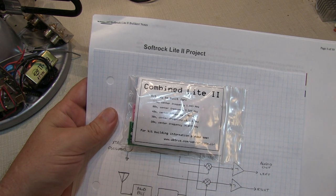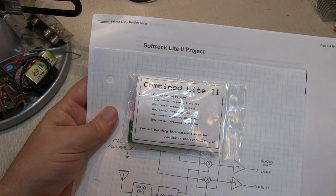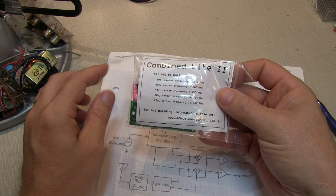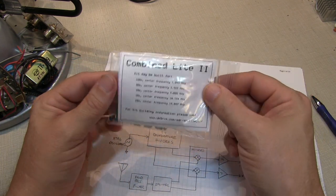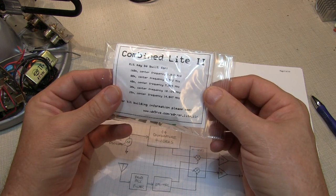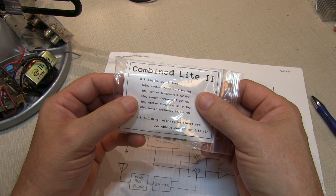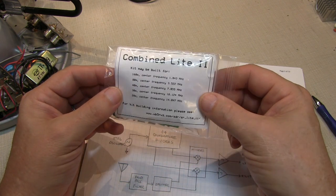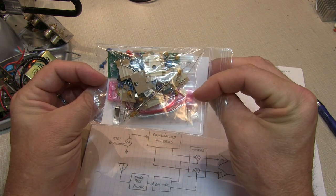In today's video, we're going to take you through the building of a Softrock Lite 2 software-defined receiver. It's a very simple receiver. You can see it's just a handful of components here. And it basically is designed for ham radio bands, can be built for either 160, 80, 40, 30, or 20 meter frequency bands. Basically what it is is a small front end for a software-defined receiver.